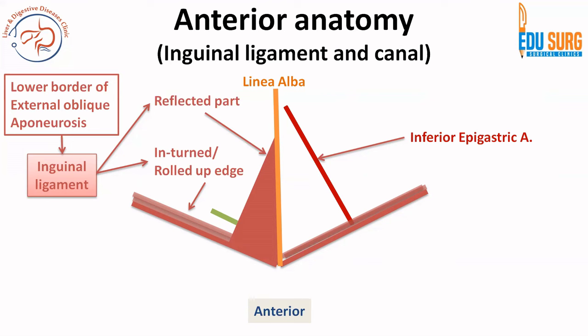So, the inguinal ligament is the lower border of the external oblique aponeurosis. It has an interned or rolled-up edge, a posterior reflection which is the lacunar ligament, and a superior reflected part towards the linea alba — that is the reflected part of the inguinal ligament.